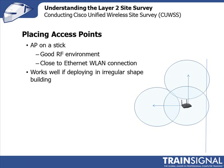To summarize, three quite different approaches have been covered: the outside-in method, aisle coverage, and AP on a stick. With these three approaches, you should be well-equipped to place your access points regardless of the shape and type of construction of the building.